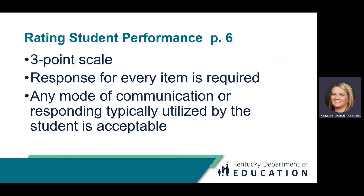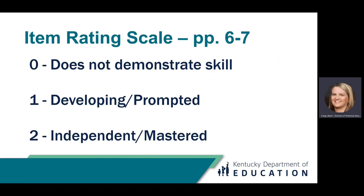Every ESAR item must be rated on a three-point scale, and there must be a response for each item. When rating an item, any mode of communication or responding that is typically utilized by the student is acceptable. The rating descriptions are on pages five and seven of the Administration Guide. Zero is the response for skills and concepts the student does not demonstrate in any setting. One is the response for skills the student displays only with some level of prompt, such as a verbal cue, partial physical guidance, or modeling. A rating of one is also used for skills that are displayed inconsistently. If a student can demonstrate a skill occasionally but not consistently, then the skill must be rated one — developing or supported.